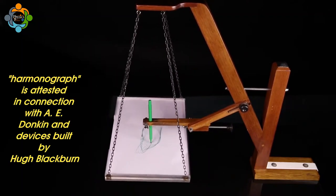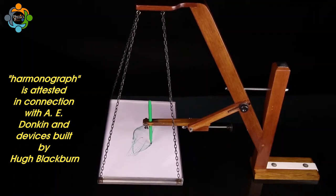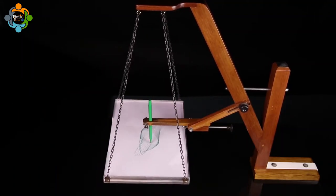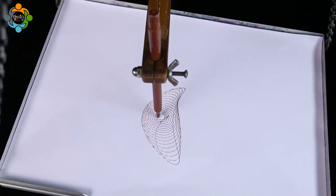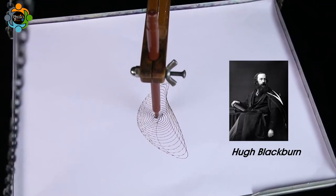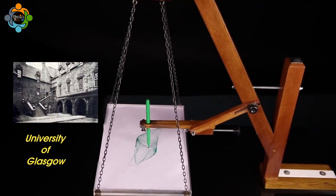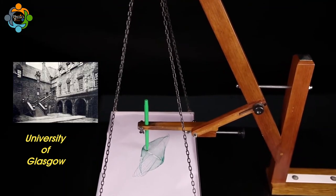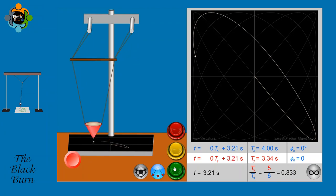In the 1870s, the term harmonograph is attested in connection with A. W. Duncan and devices built by Hugh Blackburn. The history of this device for demonstrating harmonic motion is traced, and a biographical sketch of Hugh Blackburn — who was a professor of mathematics at the University of Glasgow for 30 years — is included. When set into motion, the Blackburn pendulum oscillates back and forth following a predictable path determined by the laws of physics.